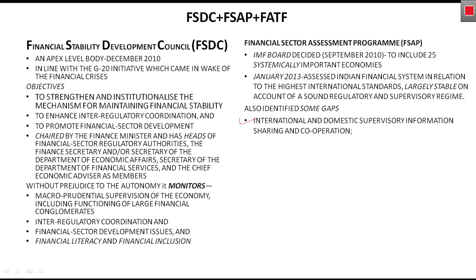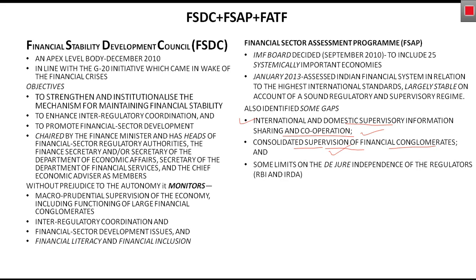The first gap identified was in international and domestic supervisory information sharing and cooperation. The second gap was that consolidated supervision of financial conglomerates was poor. Third, they observed some limits on the de jure independence of regulators — for example, RBI and IRDA — as the government sometimes has a say in RBI's functioning through ministry representation. RBI's independence is critical for decisions on financial stability, liquidity maintenance, and monetary policy.